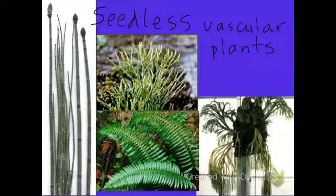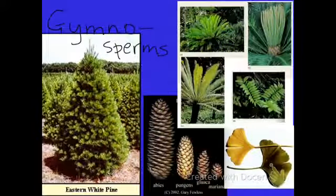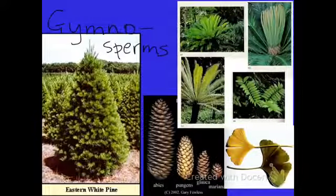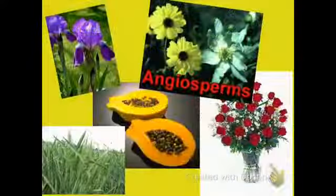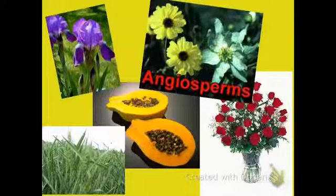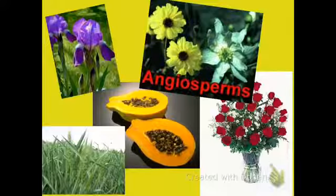Some examples of seedless vascular plants are ferns, horsetails, and club mosses. Gymnosperms have a vascular system and reproduce via male and female cones. Pollination occurs via wind, water, or animals. Some examples are ginkgos and conifers. Angiosperms are the most advanced plants. They have a vascular system and reproduce via flowers, which contain seeds. This group produces fruit, and inside the fruit are seeds that aid with dispersal.